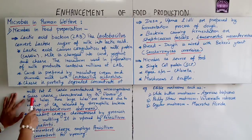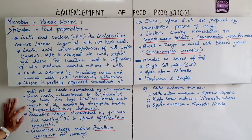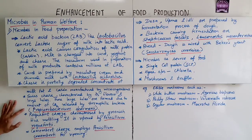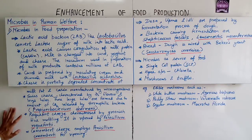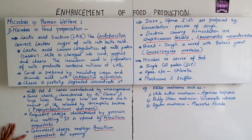There are a few types of cheese. Swiss cheese is characterized by its flavor and large holes, which are formed due to the carbon dioxide released by the thermophilic bacterium Propionibacterium shermanii. Roquefort cheese is characterized by greenish-blue molding and is ripened by Penicillium roqueforti. Camembert cheese employs Penicillium camembertii for ripening.